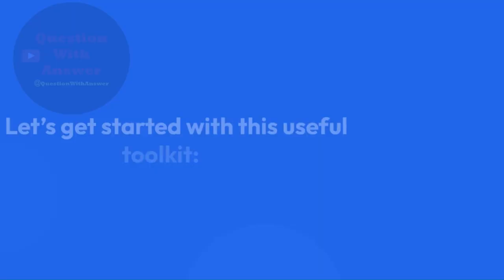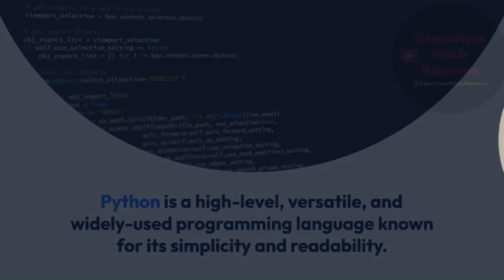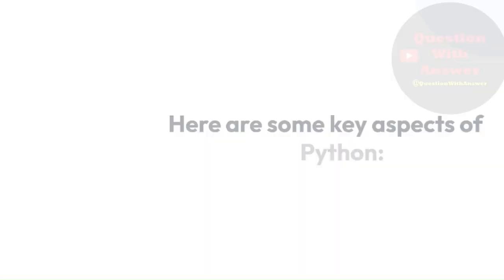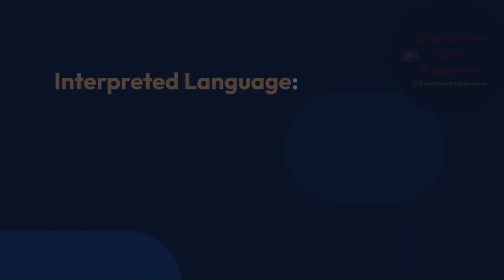1. Python. Python is a high-level, versatile, and widely used programming language known for its simplicity and readability. It is an excellent choice for a variety of applications, including web development, data analysis, machine learning, scientific computing, and more. Here are some key aspects of Python. Readability: Python emphasizes code readability and uses a clean and straightforward syntax, making it easier for developers to write and maintain code. Python is also an interpreted language, meaning you don't need to compile your code before running it.